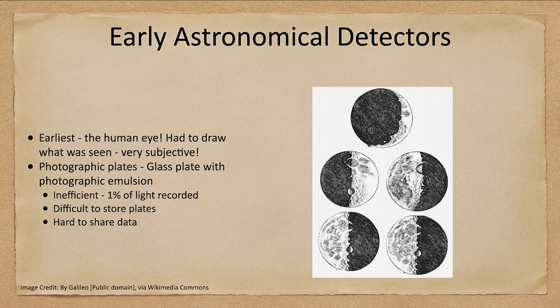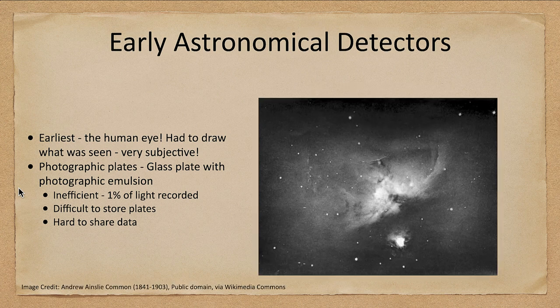Starting in the 1800s we had photographic plates that could be used. These were a glass plate that had a light-sensitive film on them, and that could be exposed and recorded. These could actually be relatively large size, maybe even six inch by six inch, and could cover a decent area of the sky. Here we see one looking at the Orion Nebula.